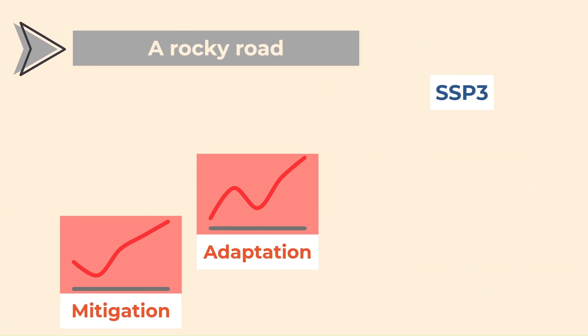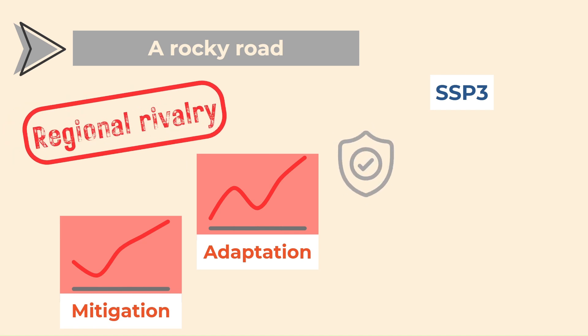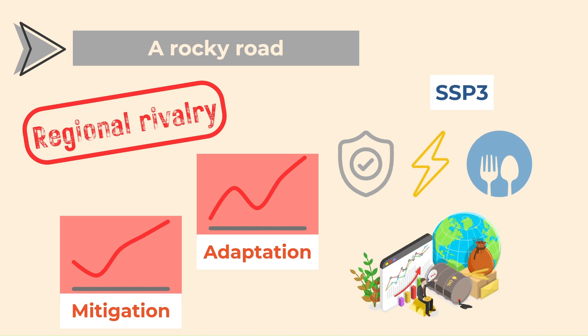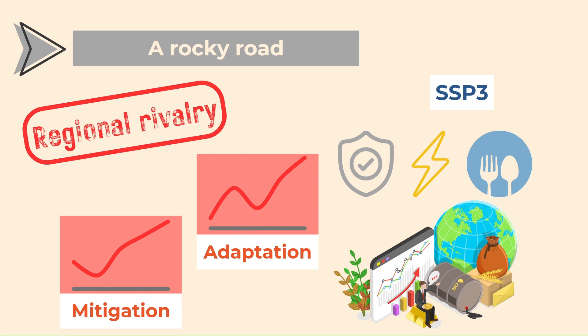SSP3, or rocky road, has high challenges to mitigation and adaptation. It is based on regional rivalry. Policies focus on security, energy and food security without considering the needs of other regions of the world. Material consumption, inequality and environmental degradation persist or worsen.